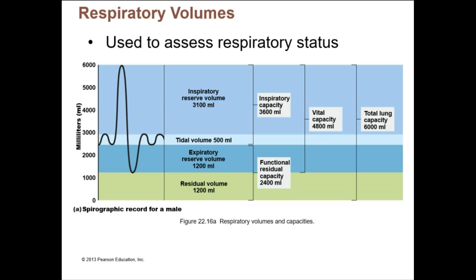Vital capacity is inhaling all the way to maximum, then exhaling all the way — the total change in volume. In this case it was a change from about 6,000 milliliters to about 1,200 milliliters — that change was our vital capacity.